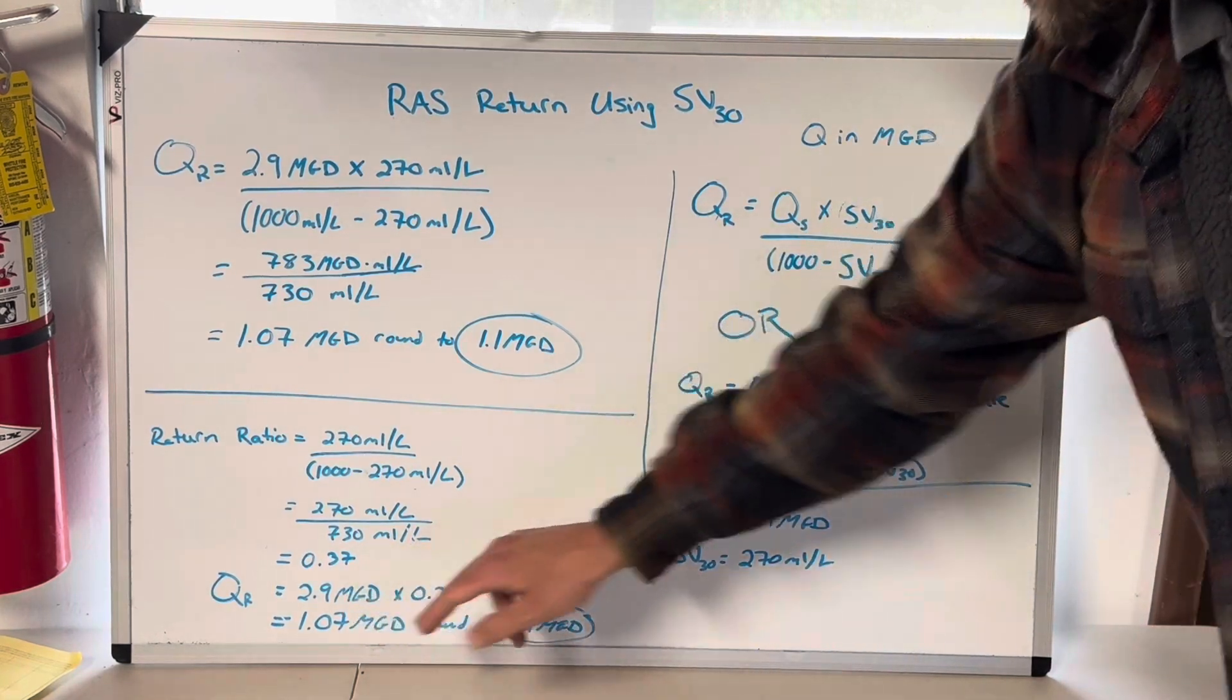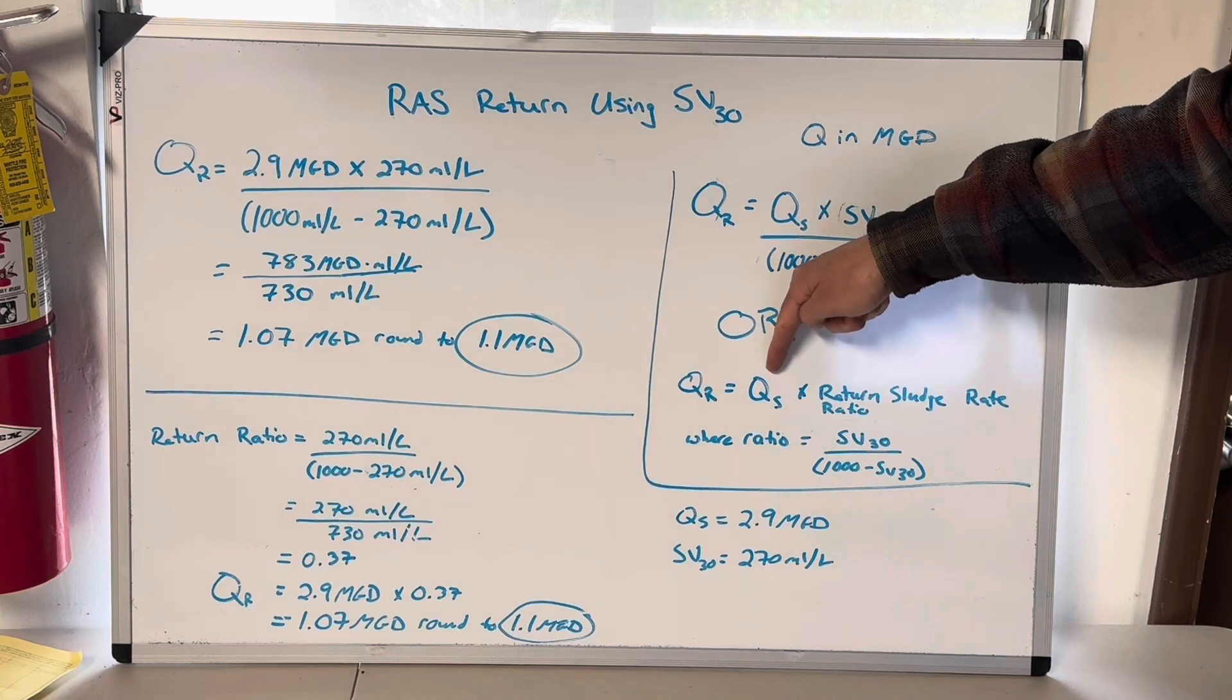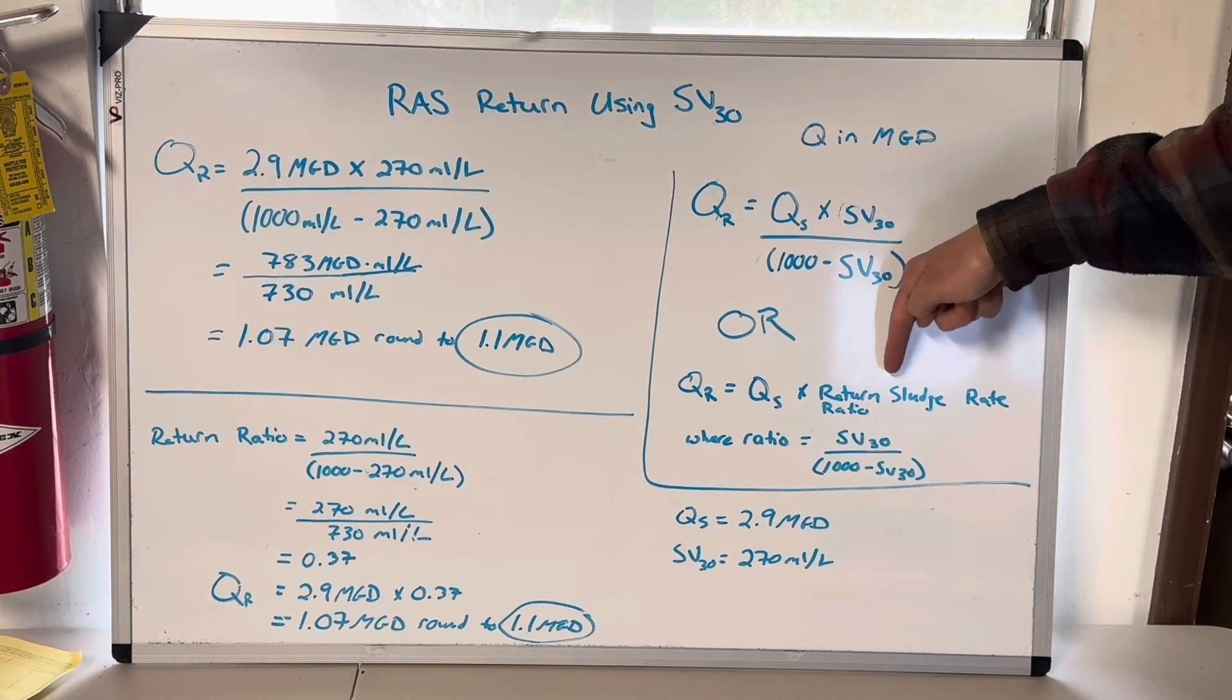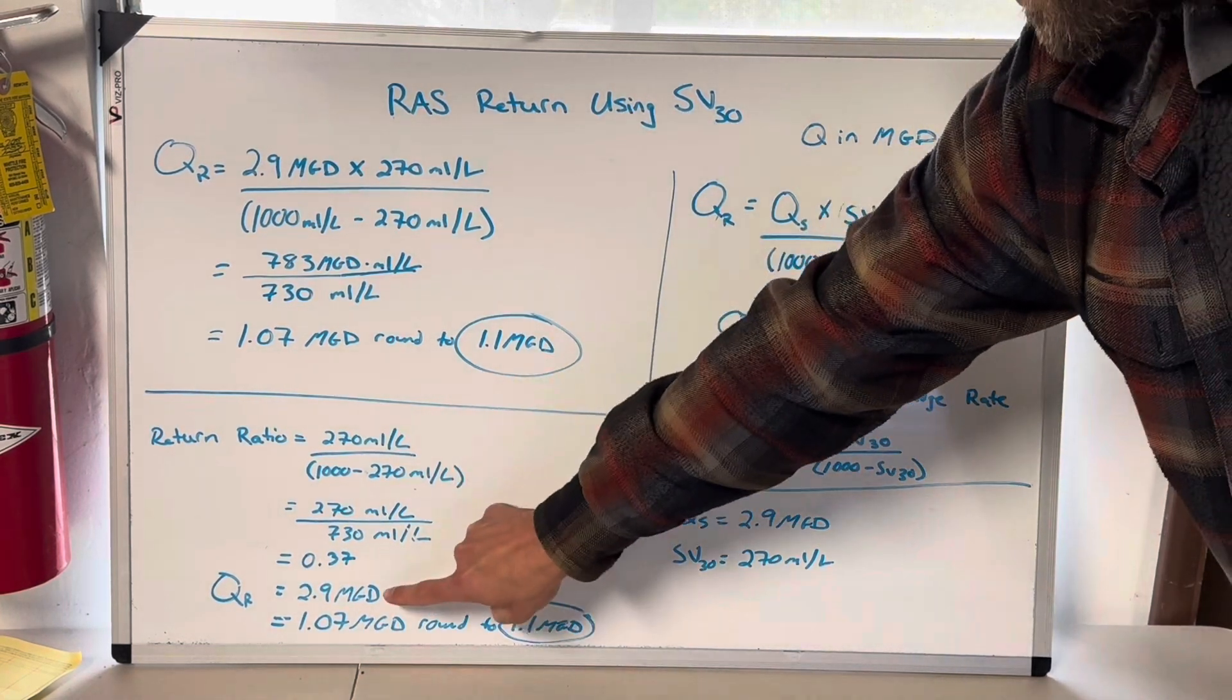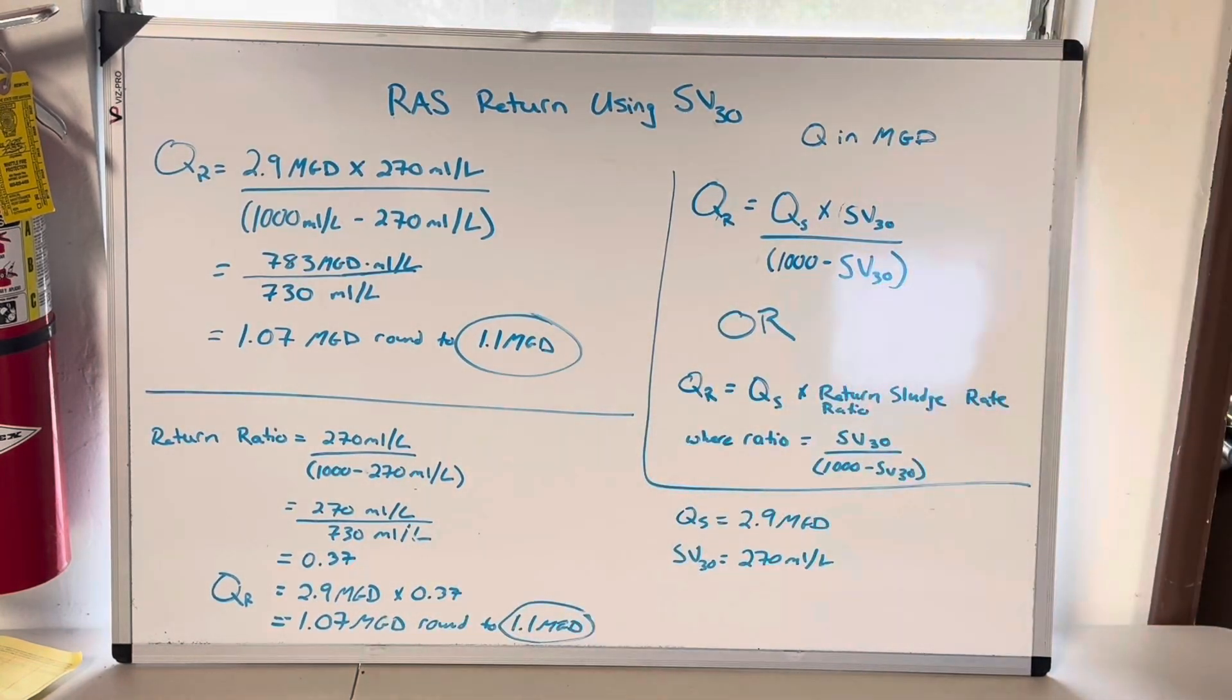2.9 MGD. Now we're going to do this equation to get our return rate, which is secondary influent flow times that ratio that we just figured out. And that's 2.9 MGD times 0.37. And that gives us the same exact number, 1.07 MGD. And we round to 1.1 MGD.